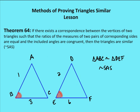Theorem 64 is the SAS similarity theorem. It says that if there exists a correspondence between the vertices of two triangles such that the ratios of the measures of two pairs of corresponding sides are equal, and the included angles are congruent — meaning the angle sandwiched between the two sides — then the two triangles are similar. In this case, I have a ratio of 2 to 1 between DEF and ABC, and I also have congruent included angles between sides DE and EF, and AB and BC. So triangle ABC is similar to triangle DEF by the SAS similarity theorem.